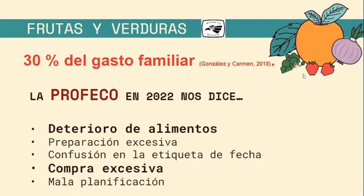Nosotros tenemos que, representa el 30% del gasto familiar, solamente la compra de frutas y verduras. Si a eso le agregamos otros productos de origen animal, nosotros tenemos que en México se puede gastar entre el 45% y casi 50% de nuestro gasto familiar corresponde a alimentación. Por lo tanto, nosotros tenemos ahorita en México una crisis de seguridad alimentaria por el abasto de alimentos, y es una crisis que no solo sucede en México, sino también en el mundo. Y la PROFECO nos dice que nosotros estamos perdiendo nuestros alimentos o los estamos desperdiciando porque hay un deterioro en los alimentos.